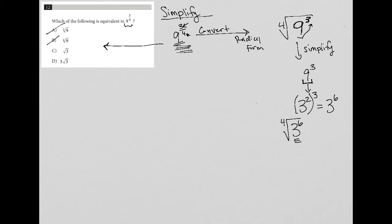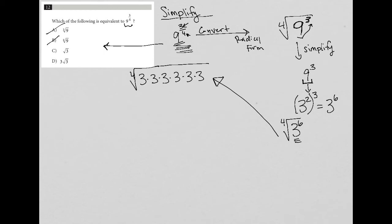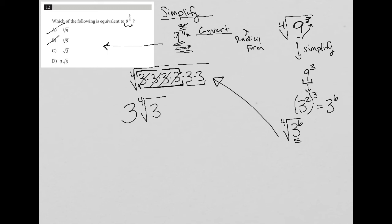How do I simplify a fourth root of three to the sixth power? I'll break this down visually. The fourth root of three to the sixth is the same as the fourth root of three times three times three times three times three times three — six threes. The fourth root means a number times itself four times can be pulled out. These four threes constitute a number times itself four times, so I pull one three out front, leaving the fourth root of three squared inside.